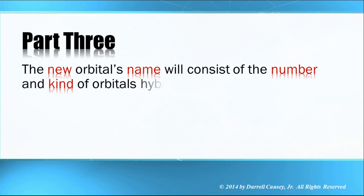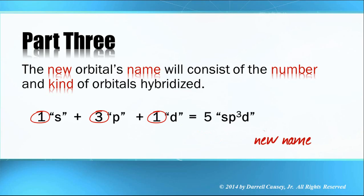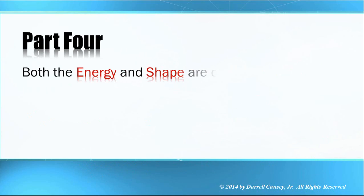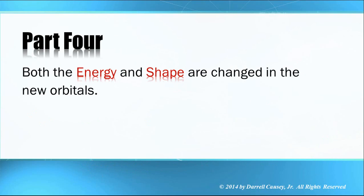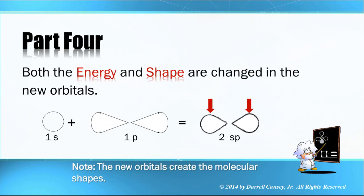Third, the new orbital's name will consist of the number and kind of orbitals hybridized. So an s and a p gives you two sp's. Or an s with three p's and one d — count them up — gives us five sp³d's. The superscript three tells us how many p orbitals there are. Fourth, both the energy and the shape are changed in the new orbitals, giving us a new shape somewhere in between the two originals.